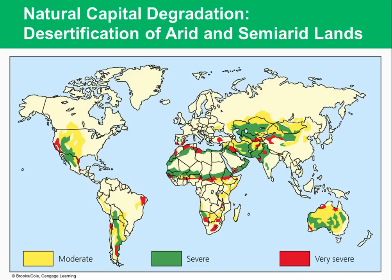Natural capital degradation shows the areas where soil has been extremely disturbed. This happens most in regions that are already more arid, surrounding deserts, or where there are really poor farming practices in place. Keep in mind that human-caused global warming is intensifying this effect rapidly.